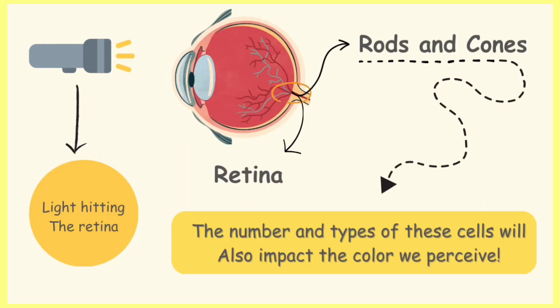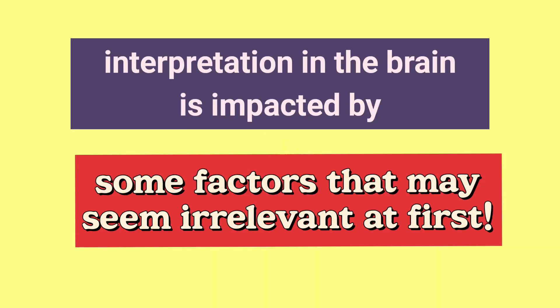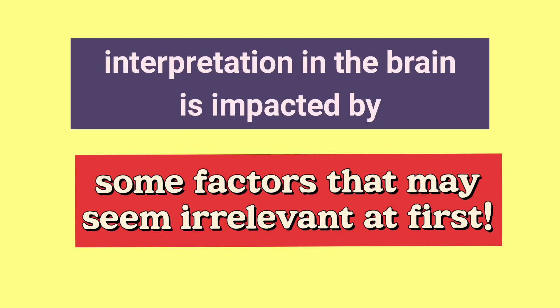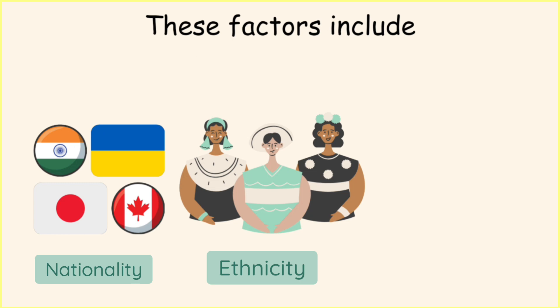Now, once we absorb the light, it will reach our photoreceptors in our retina, which are the rods and cones. The number and type of these cells present will also impact the color we perceive. The cones generate an electrical signal affected by the light that hit them and send this signal to our visual cortex. Research shows that the way our brains interpret these signals is affected by many factors that may seem irrelevant to biology at first glance. These factors include our national origin, ethnicity, geographical location, and even the language we speak.